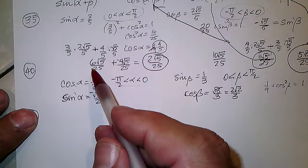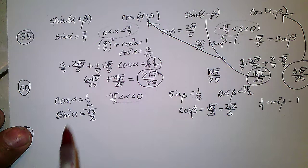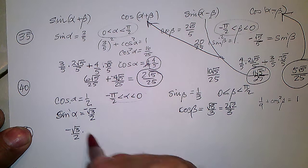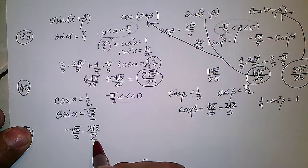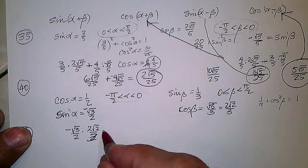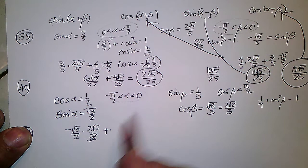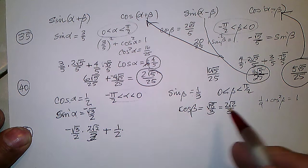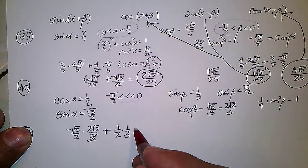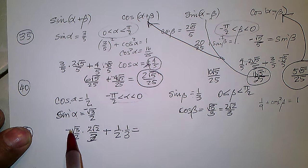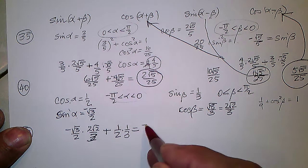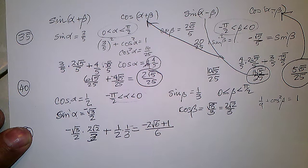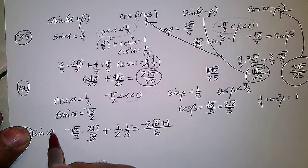Sine of alpha plus beta equals sine alpha times cosine beta plus cosine alpha times sine beta. That's negative √3/2 times 2√2/3, plus 1/2 times 1/3. This equals negative 2√6 plus 1 over 6.